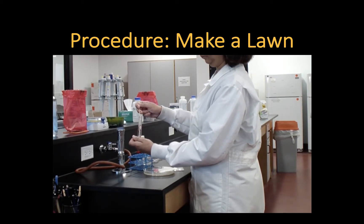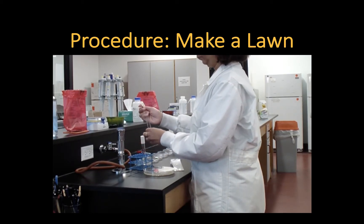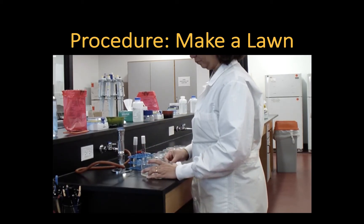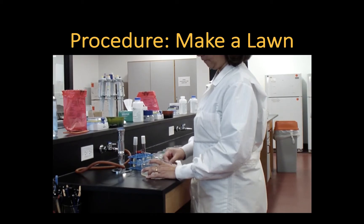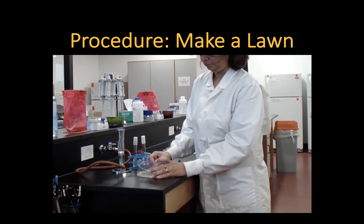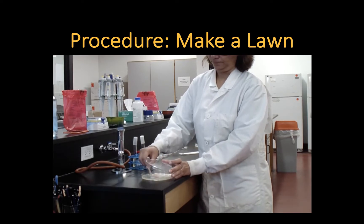Saturate the cotton swab with the bacterial broth, pull it halfway out and squish it to the side. Now with the saturated cotton swab, you're going to make even overlapping strokes on the surface of the plate, making sure you cover the entire surface.